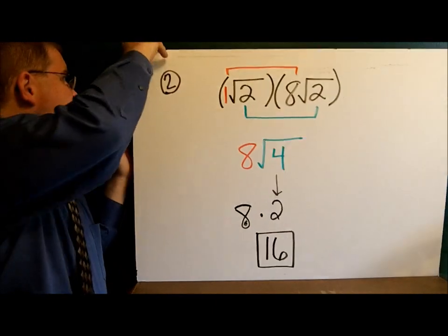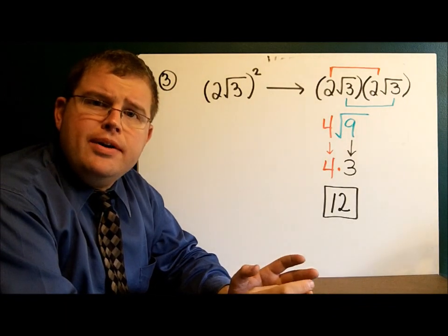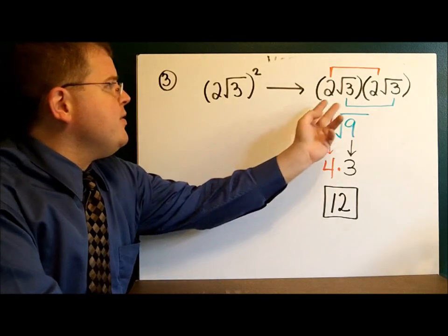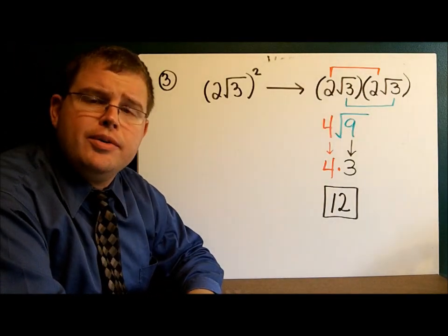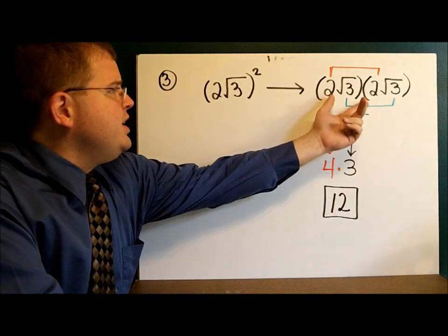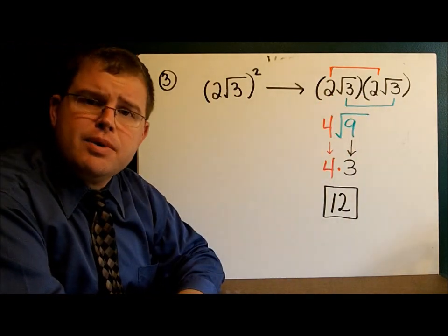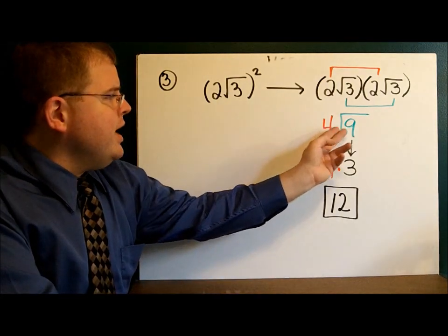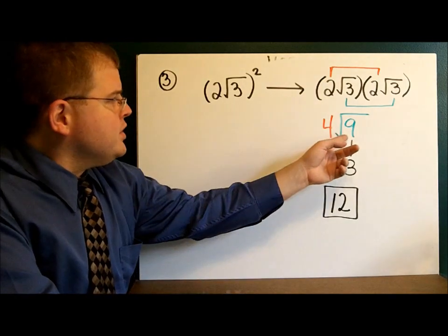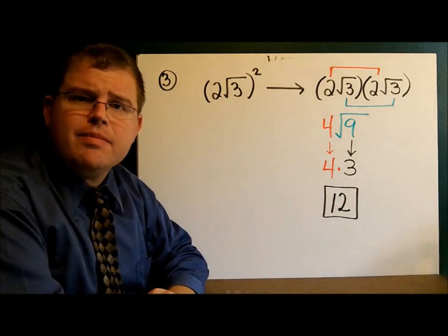Example 3: we have 2 square roots of 3, and we have the whole thing squared. Remember, when we square something, we're multiplying it by itself twice, so this is really equivalent to 2 square roots of 3 times 2 square roots of 3. Multiply the outsides, multiply the insides. Our coefficients are 2 times 2, which is 4. Our radicands are 3 times 3, which is 9. So we have 4 times the square root of 9. The square root of 9 is 3, so we have 4 times 3, which is 12.